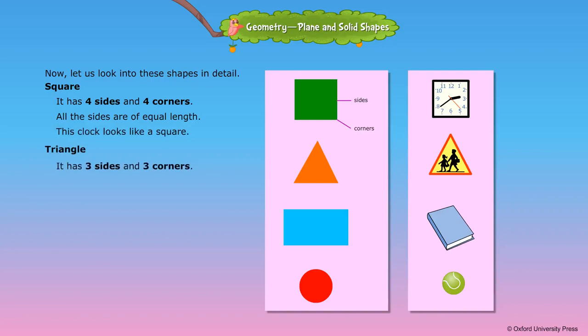Triangle: it has 3 sides and 3 corners. This signboard looks like a triangle.